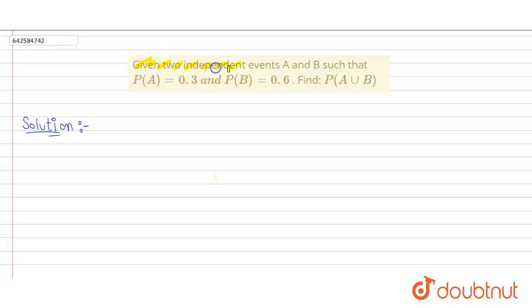We have given two independent events A and B such that P(A) is 0.3 and P(B) is 0.6, and we have to find out P(A union B).